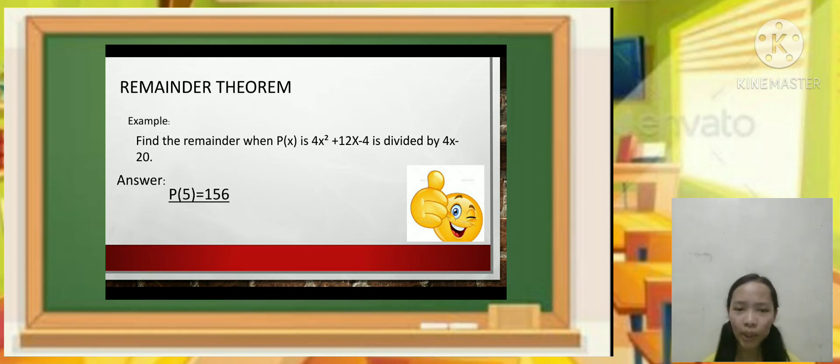For those confused, it seems difficult and hard to understand. We'll give an example to better understand. The example is: find the remainder when p(x) = 4x² + 12x - 4 is divided by 4x - 20. The answer I got is p(5) equals 156. If you're wondering how I got 156, watch this video to better understand.